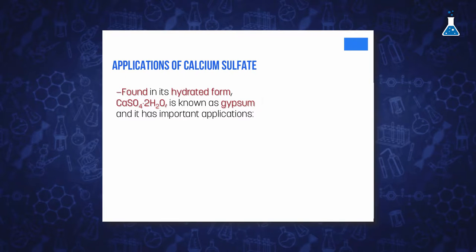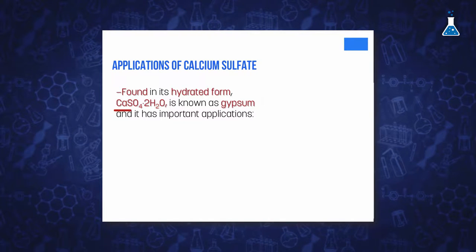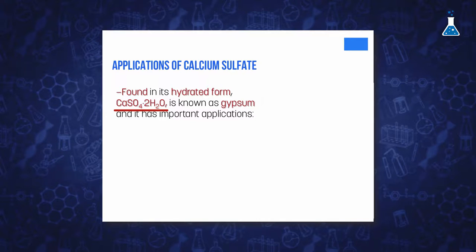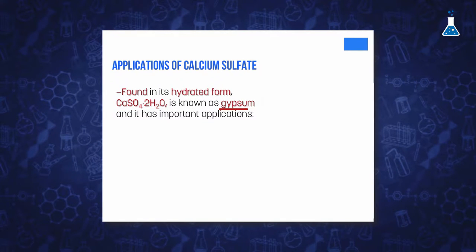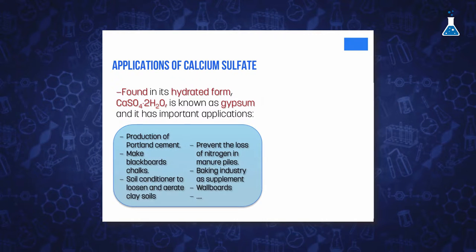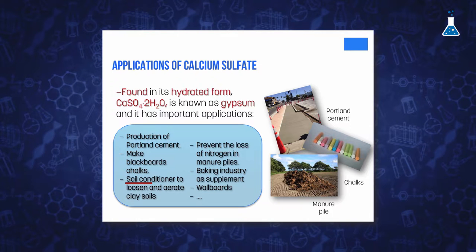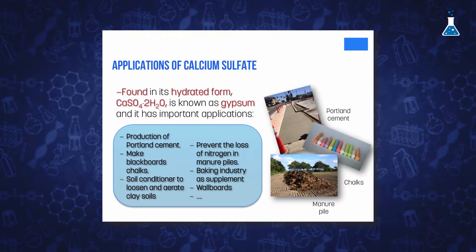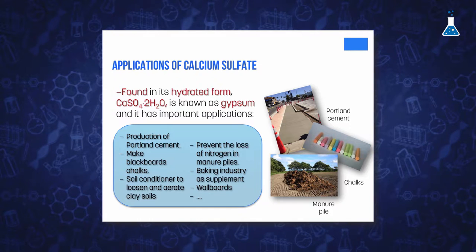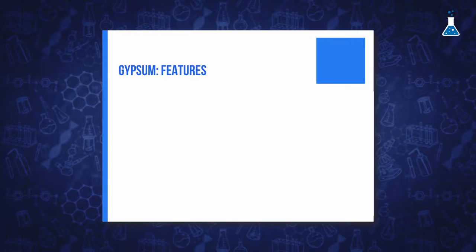Calcium sulfate is usually found in its hydrated form, commonly known as gypsum, which has important applications in the production of Portland cement, to make blackboard chalk, as soil conditioners to loosen and aerate clay soils without raising the pH, and to prevent the loss of nitrogen in manure piles by producing ammonium sulfate when it reacts with nitrogen.